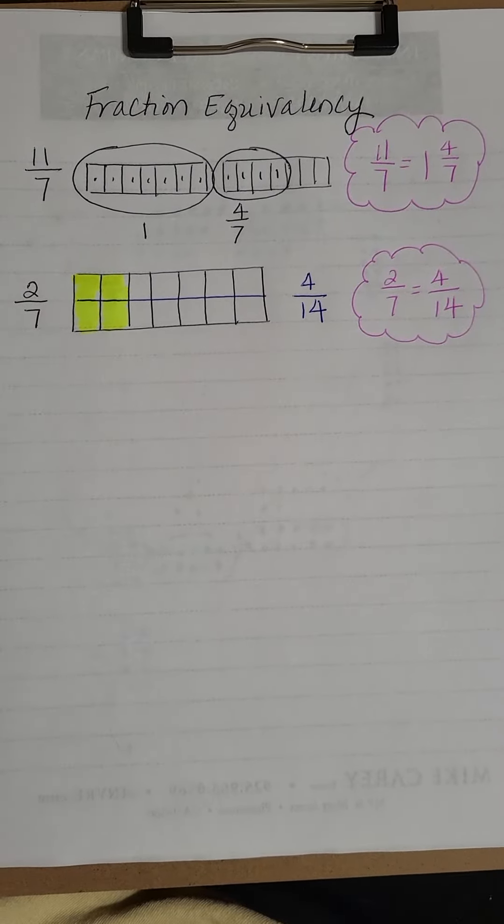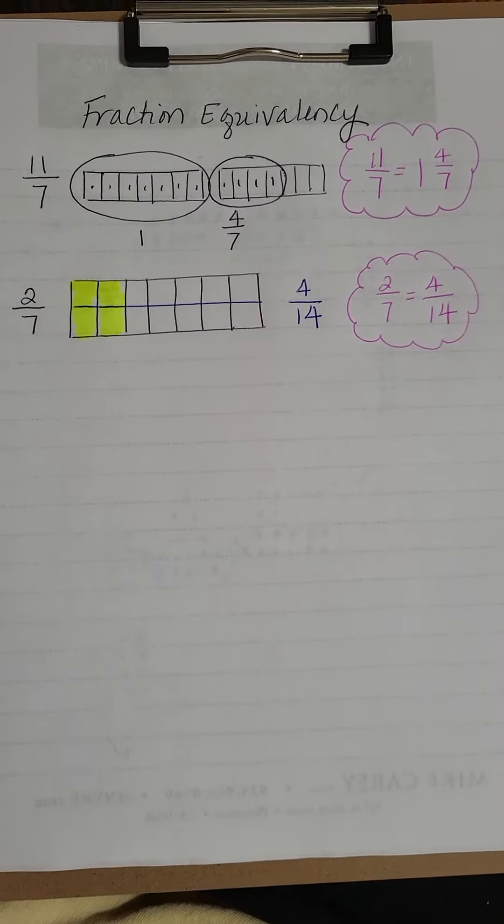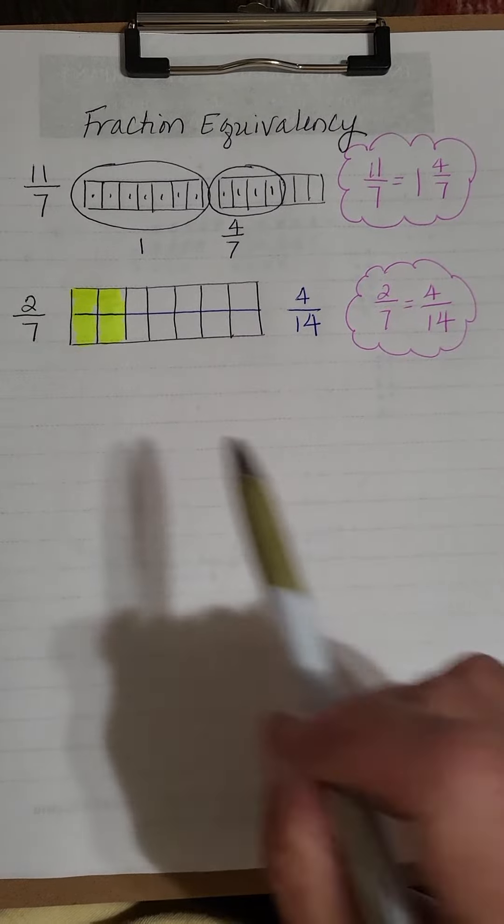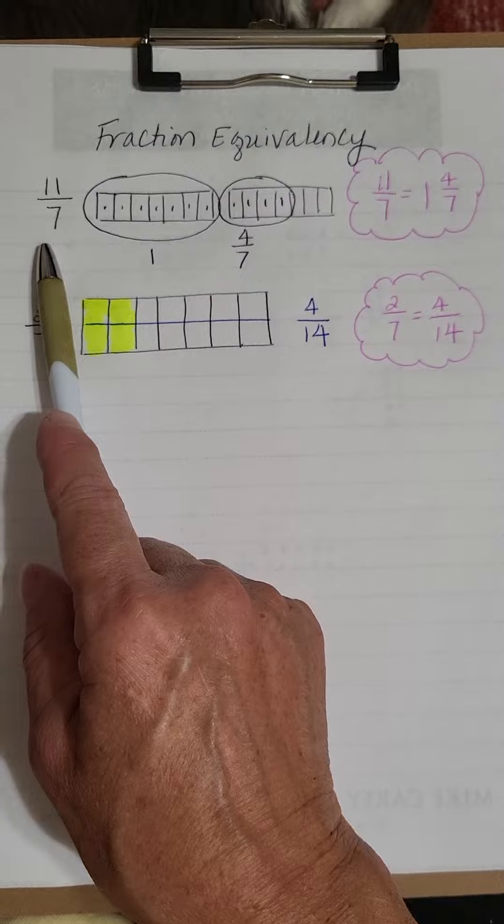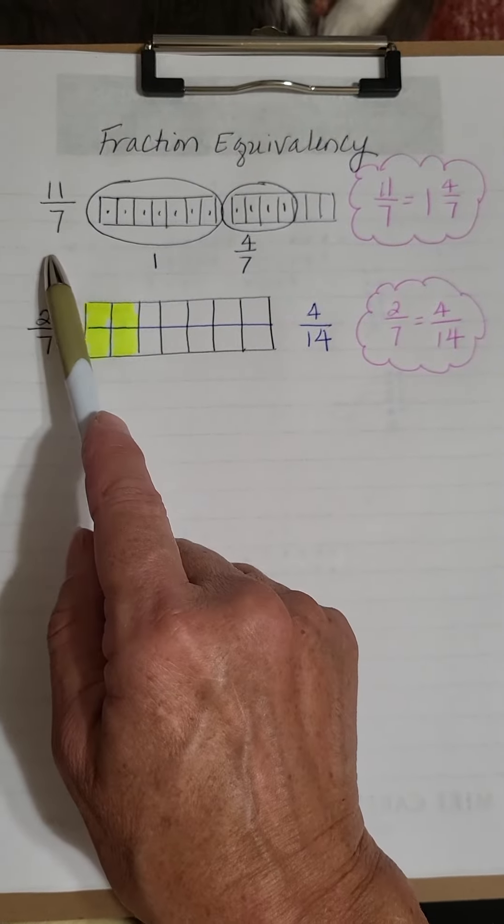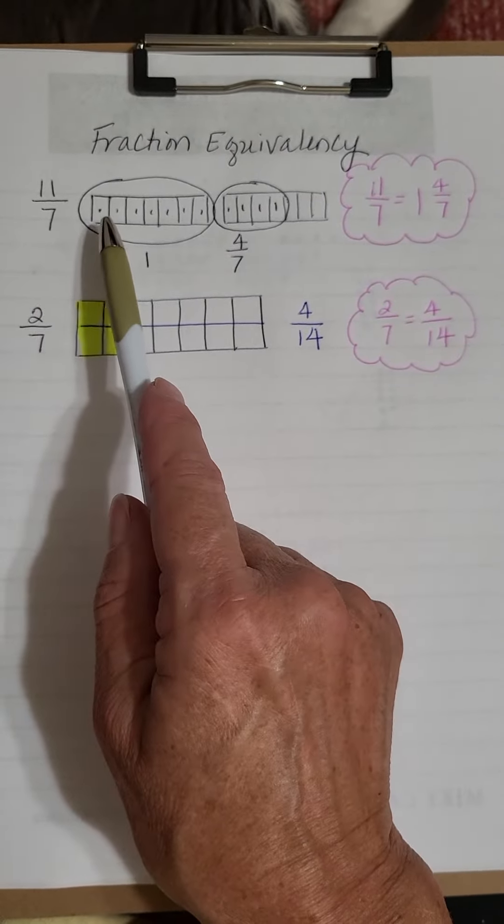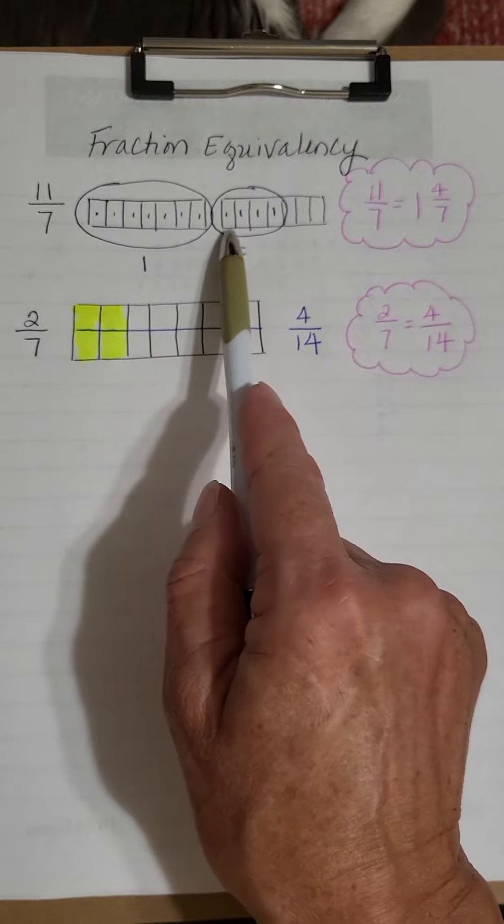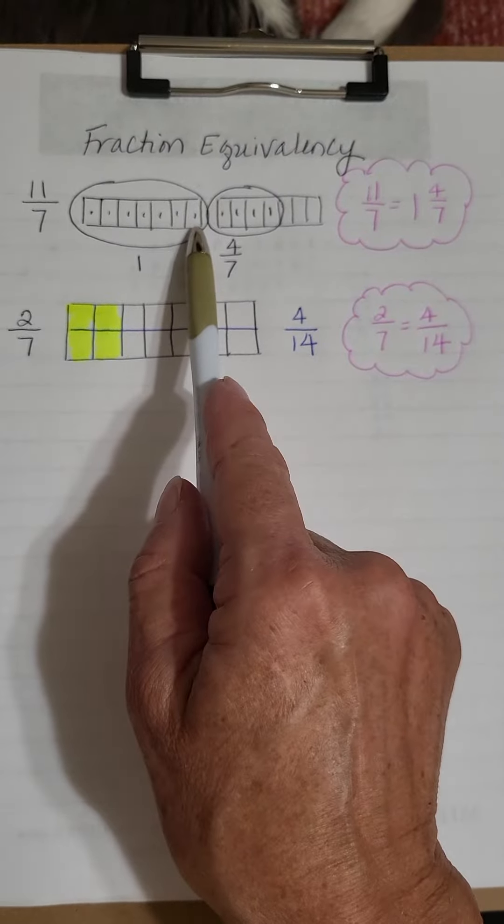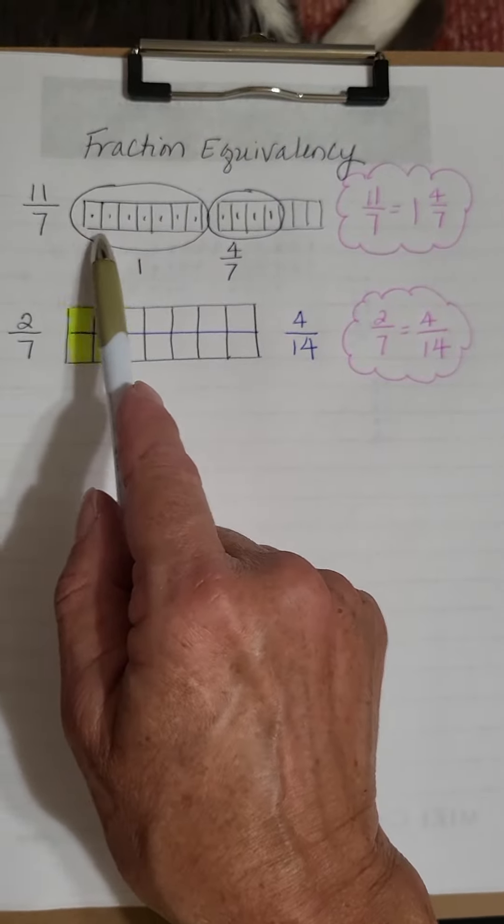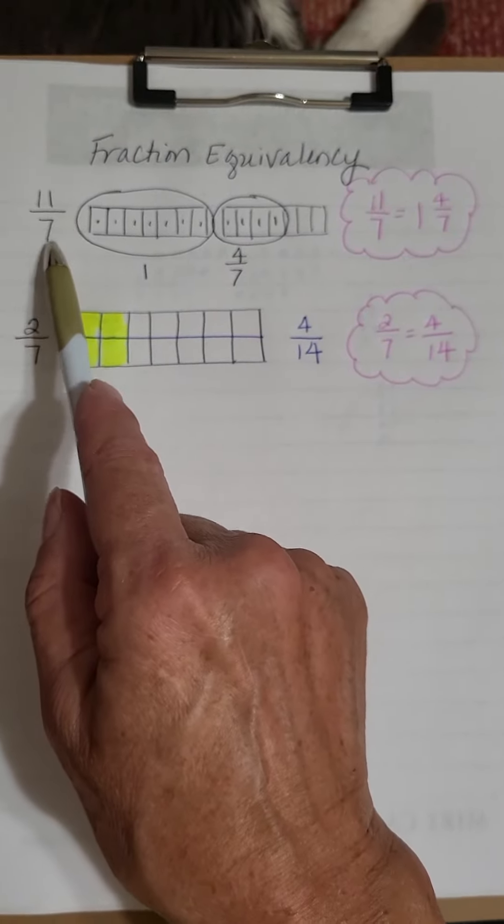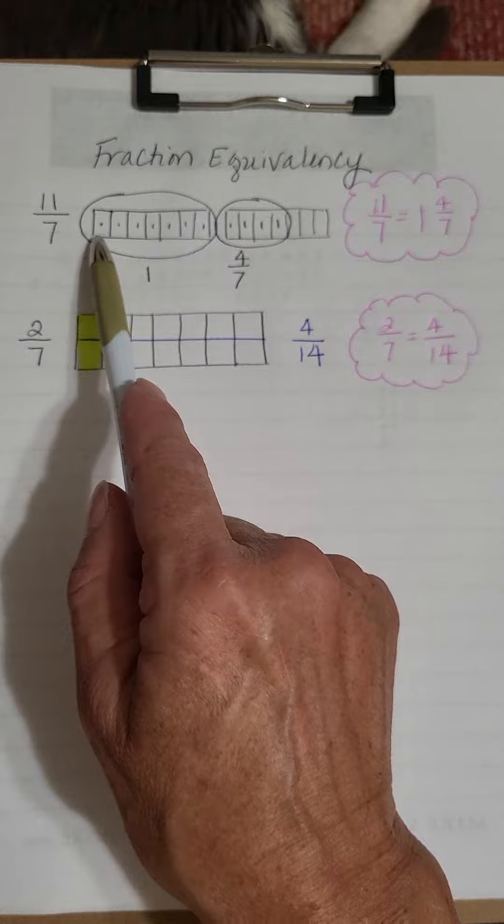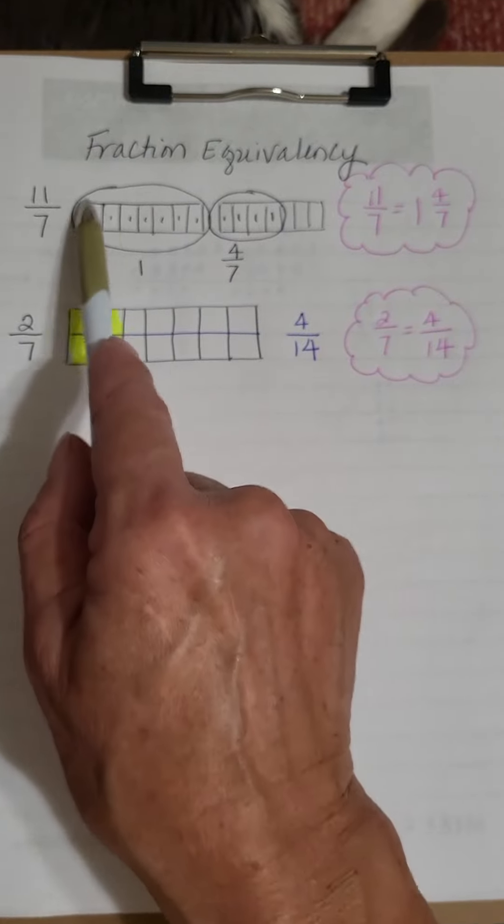I decided to use a tape diagram to express a fraction equivalency. I started with 11 over 7, an improper fraction. The denominator 7 means that I have groups of 7 that equal one whole, so I put together two groups of 7.